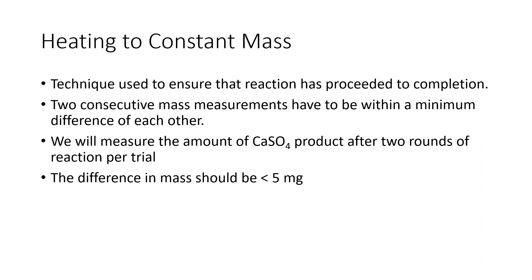One of the techniques we're going to use is something called heating to constant mass. This is essentially a strategy that is used to ensure that the reaction has proceeded to completion. The way we apply it is we take two consecutive mass measurements and they have to be within a minimum difference of each other. In our case, we're going to do the chemical reaction, we're going to obtain calcium sulfate product and weigh it. Then we're going to add acid again and repeat the reaction and weigh it after the second round of reaction. This is for each trial - we're going to have two trials for each experiment.